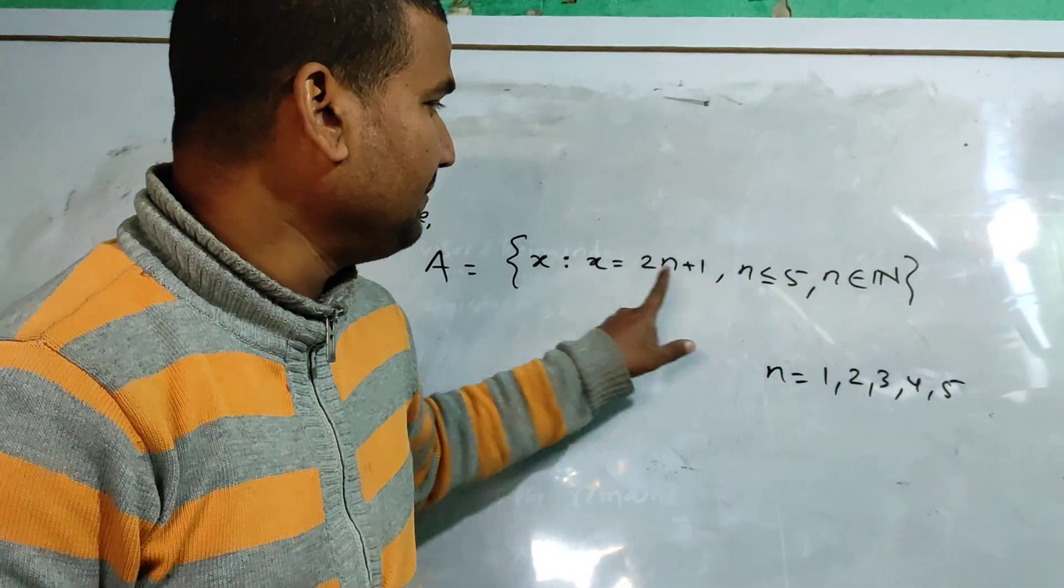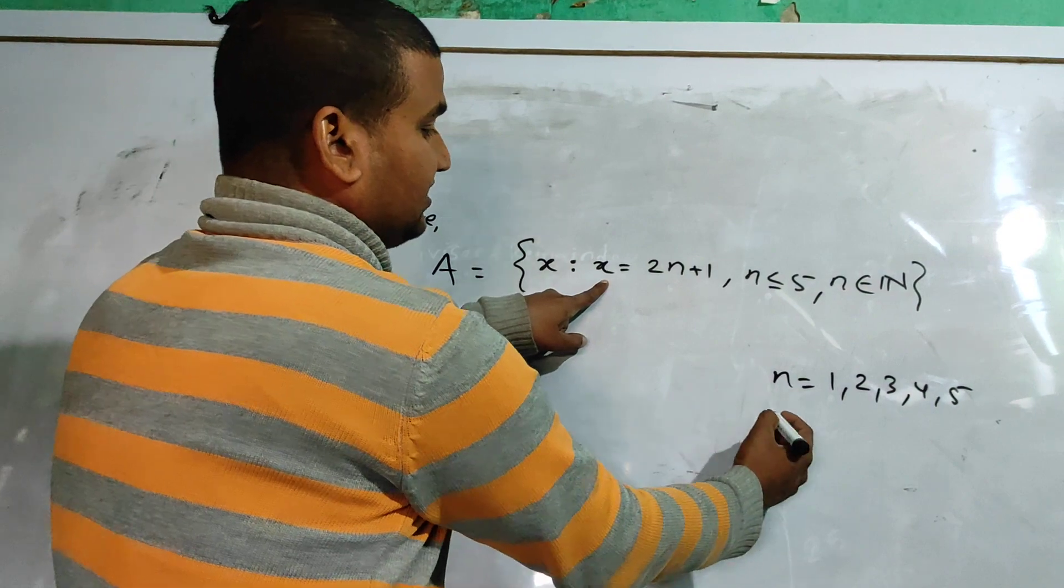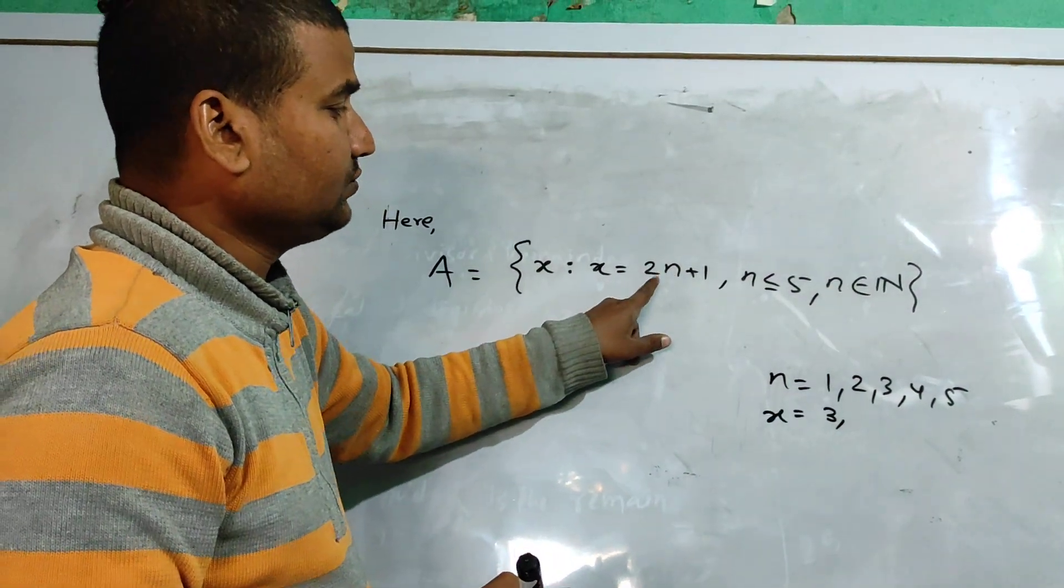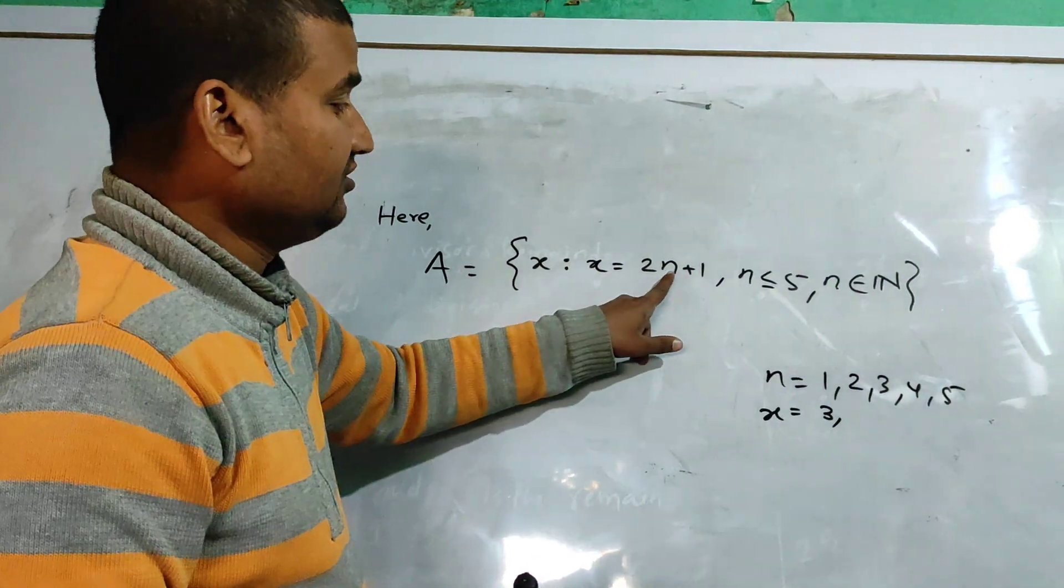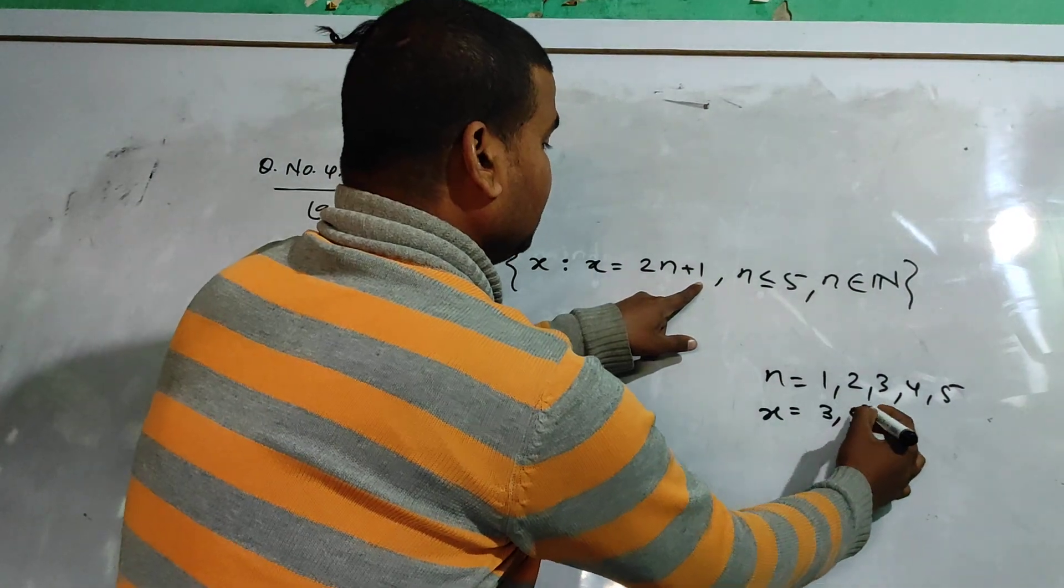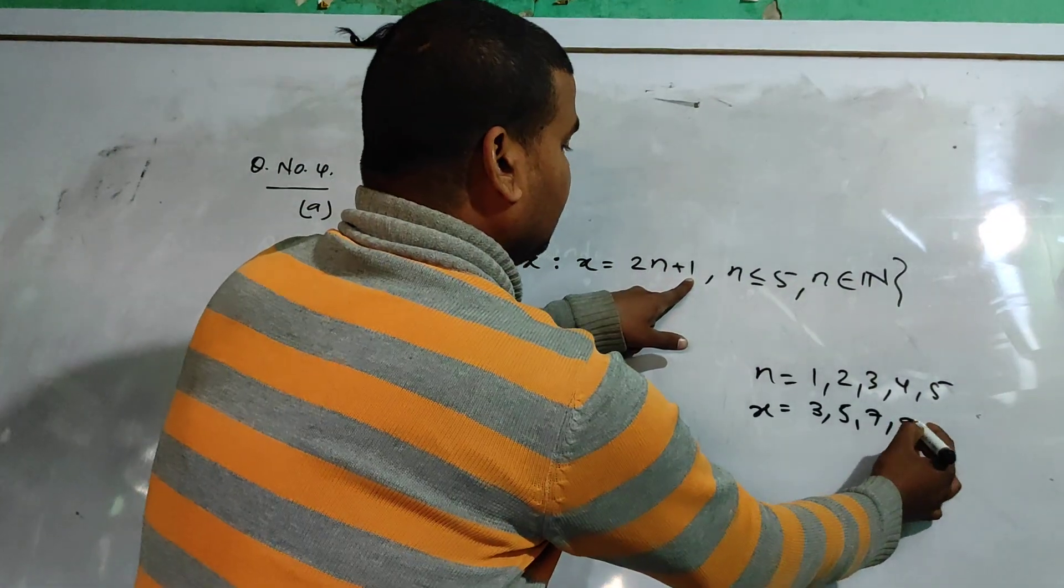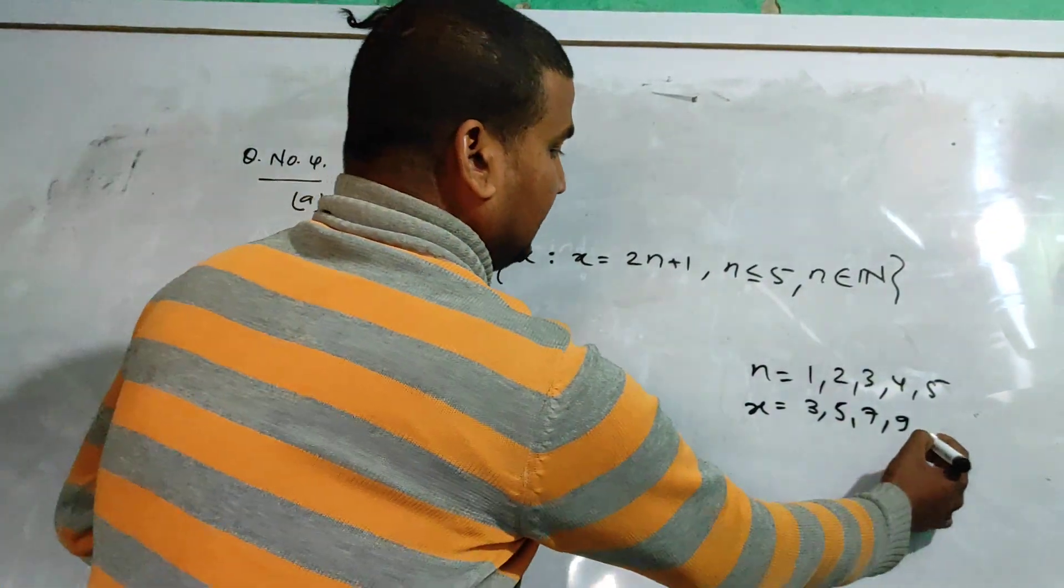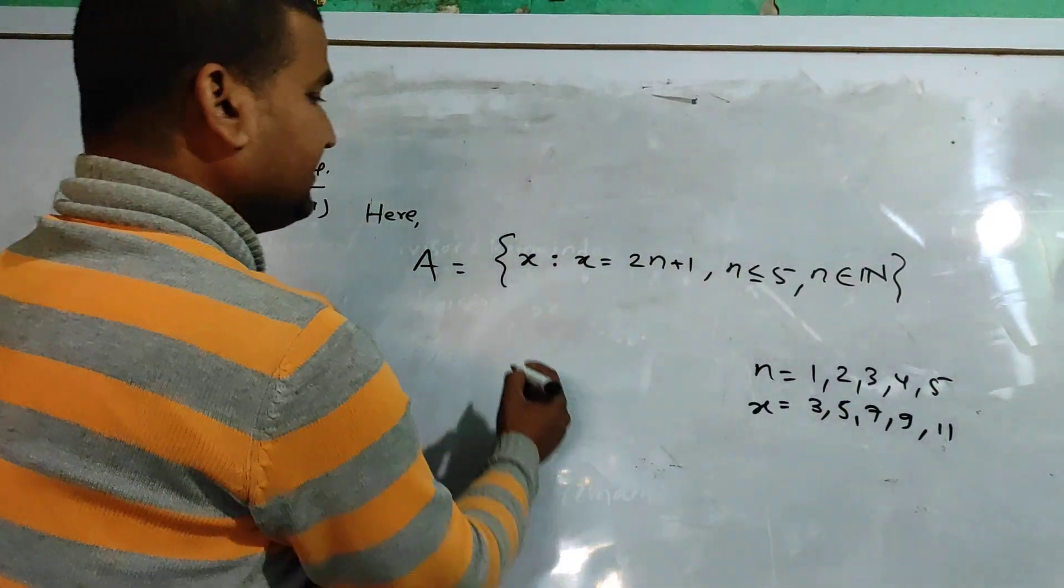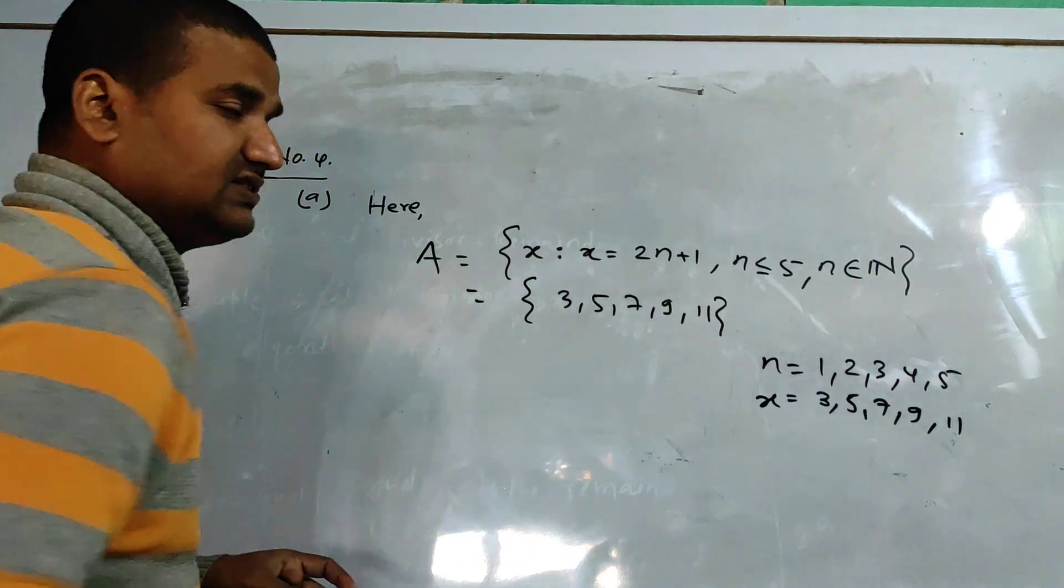We substitute x values. When n equals 1, x equals 3. When n equals 2, x equals 5. When n equals 3, x equals 7. When n equals 4, x equals 9. When n equals 5, x equals 11. So we can write the set as 3, 5, 7, 9, 11. Now you can write the set in roster form.